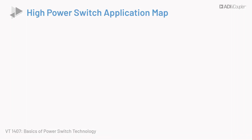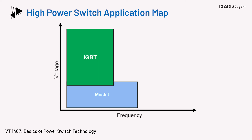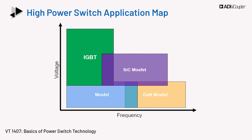The application space for devices is different with respect to voltage and frequency, even though there is an overlap. For low voltage, higher frequency operation, the device of choice is the MOSFET. For higher voltage, lower frequency operation, IGBTs are used. Due to the limits on fabrication technology with gallium nitride, presently those are only used for lower voltage, high frequency applications, and GaN devices are used as a replacement for the MOSFET in high performance systems. Meanwhile, silicon carbide is substituted for the IGBT in higher voltage application spaces due to silicon carbide's advantage of higher frequency operation. Having looked at the various types of switches, we now look at how to switch them.